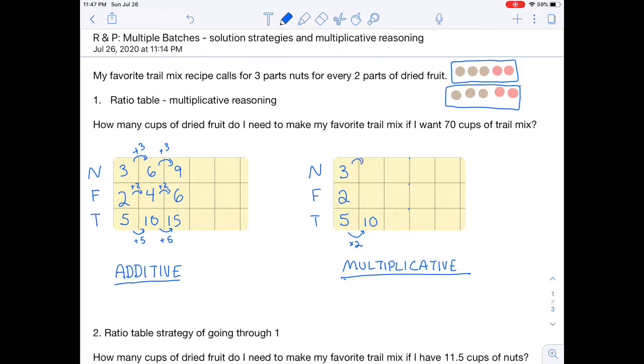I'm going to take three times two to get six cups of nuts because I have two sets of three. Two sets of two will give me four cups of fruit, and two sets of my five total cups gives me 10 cups. I chose 10 because I can easily get to 70. Seven sets of 10 means I'll have 70 total cups, but now I'll need to take seven sets or seven groups of each of the other parts of the ratio. And I quickly get to my answer. The answer to this problem is I need 28 cups of fruit.